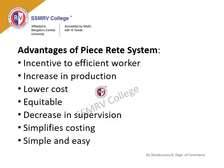Advantages of the Piece Rate System: Incentive to efficient workers — the worker who produces more gets more wages including commission. Increase in production — each worker is motivated to produce more quantity to earn higher wages. Lower cost — more units produced means lower cost of production per unit. Equitable — individual-based, so efficient workers benefit from their own output. Decrease in supervision — since wages are based on units produced, no need for supervision. Simple costing — straightforward wage calculation based on units.